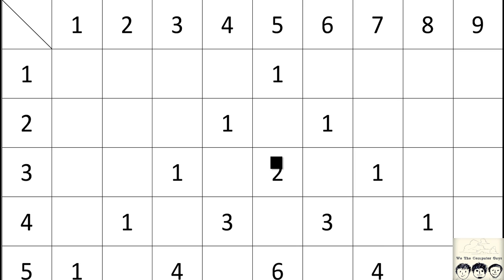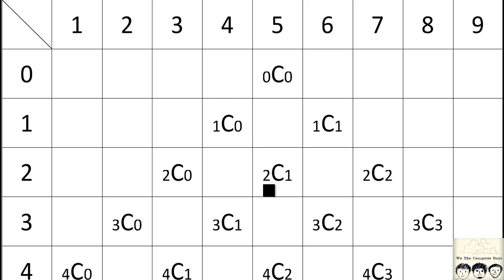Now if you know the binomial theorem, you can also get this pattern using that. Now if you are a good observer, you must have spotted a difference in this diagram — in all previous videos we started from one, but in this case we will be starting from zero. This is like nCr. You need to know permutation and combinations at a basic level, so if you don't, please Google it.